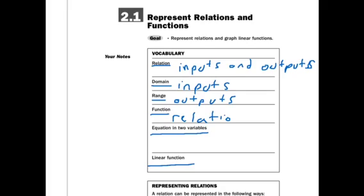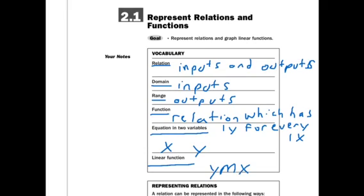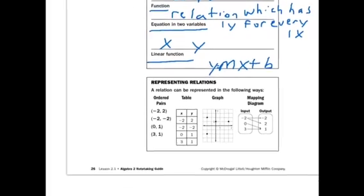And a function is a relation comparing X's and Y's. A relation which has one Y for every one X. An equation in two variables would be equations that have X's and Y's. And a linear function is like Y equals MX plus B. Which you guys have seen before. That's the equation for a line, right?